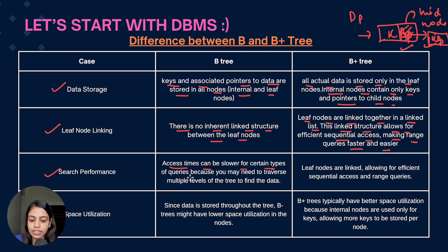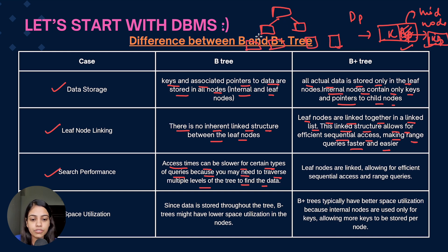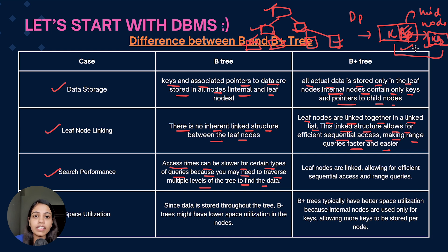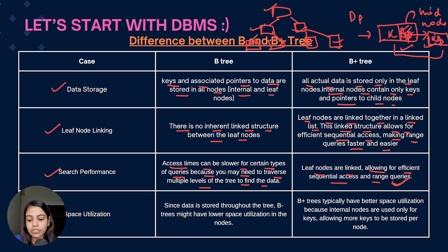The third difference is search performance. In a B-tree, access time can be slower for certain queries because you may need to traverse multiple levels of the tree to find the data — there might be a need to traverse the entire dataset. In a B+ tree, since all data is stored only in the leaf nodes, you only need to traverse the leaf node or the linked list structure at that level. This makes B+ trees very helpful for range queries.